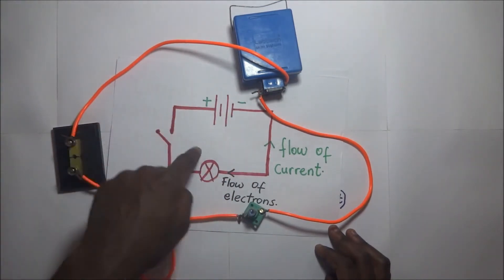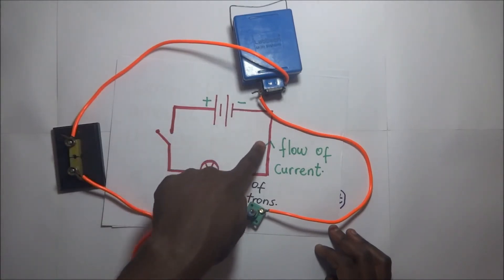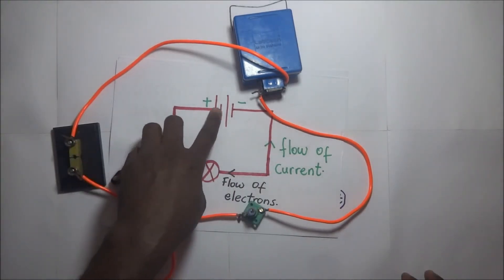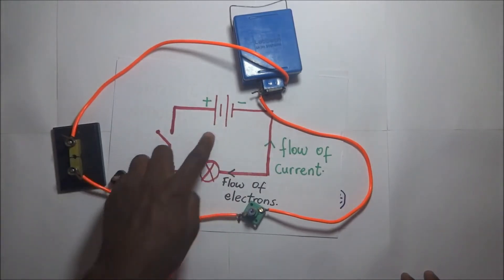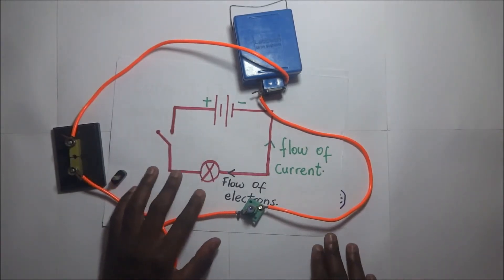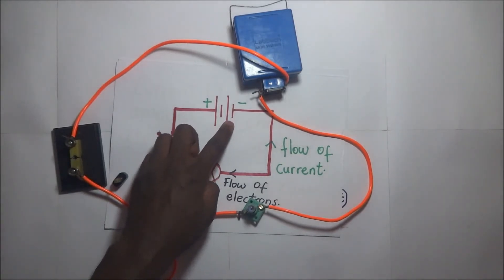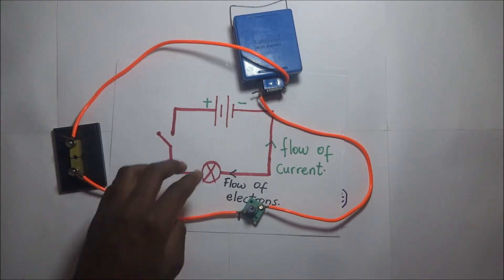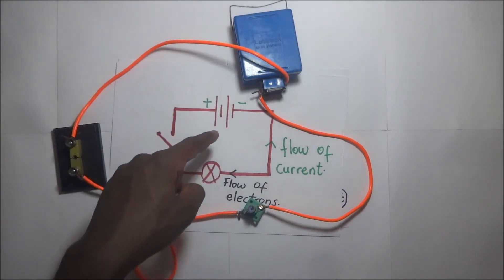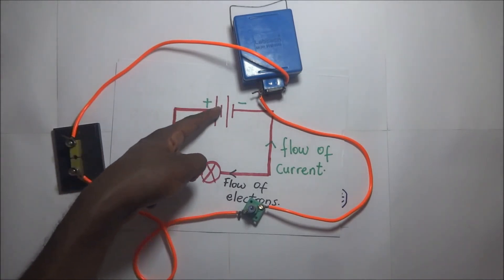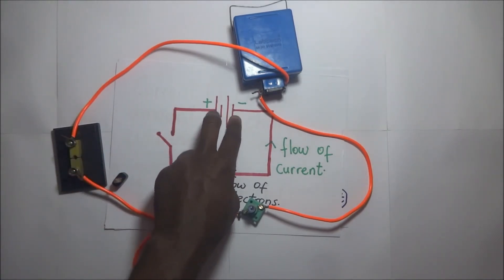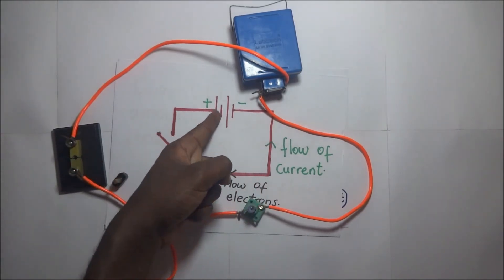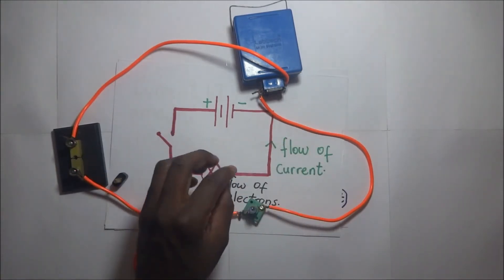If there is any breakage in the circuit and it is not complete, the connection will be incomplete and there won't be a complete flow of electrons. How are these electrons able to flow through the conductor — the wire? They are able to move because there is a force behind them. This force is what we call voltage. Think of voltage as a force — the voltage across the battery is what causes those electrons to accelerate through the circuit.